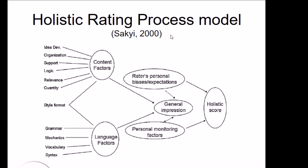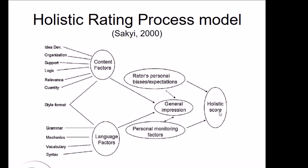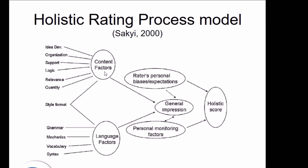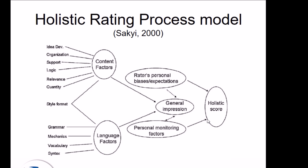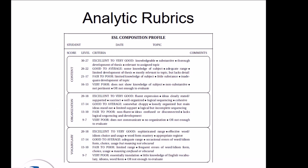Here is a representation of the holistic writing process, which starts from content factors and language factors and ends in the holistic score. As you see, there are many things that affect the holistic score, but the question always remains: which one of these components contributes to that holistic score the most? Is it idea development, or is it relevance, or is it style and format, or is it the language factors? This is from Sakai 2000. We don't know, because the holistic scoring system doesn't have a solution for that.